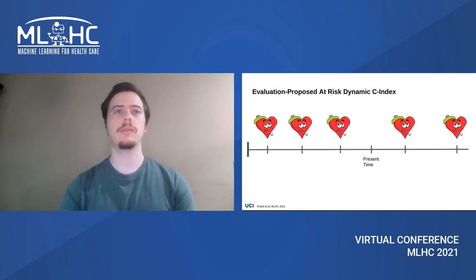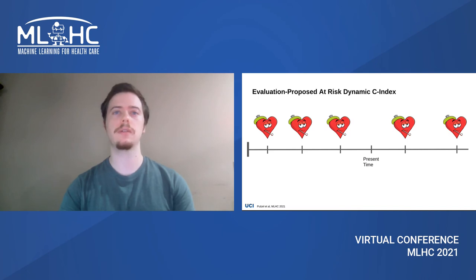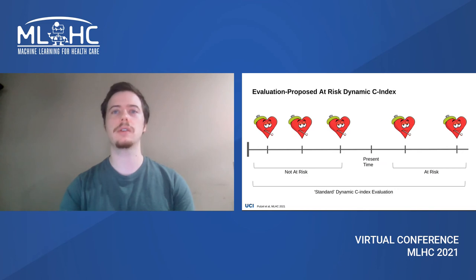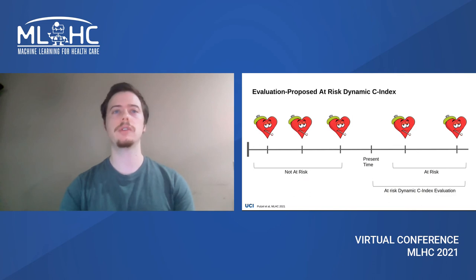We also propose a new form of the dynamic C-index. Consider predicting time to onset of cardiovascular disease, like in one of the dataset applications in our paper, with each of the hearts here representing different times to events for different individuals. The three individuals to the left represent individuals who have already had a CVD diagnosis, while those to the right are still at risk at the present time. A commonly used dynamic C-index evaluates performance over both at-risk and non-at-risk individuals, whereas our proposed version only evaluates performance over at-risk individuals, which is more relevant for clinical applications.